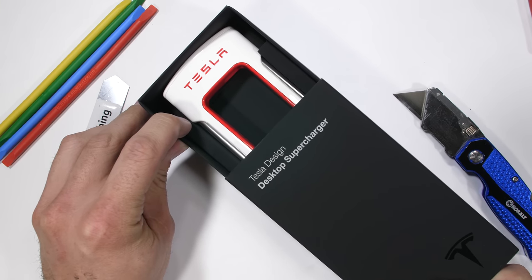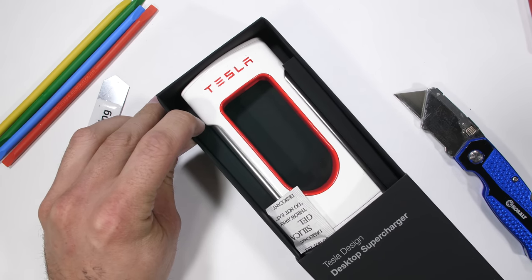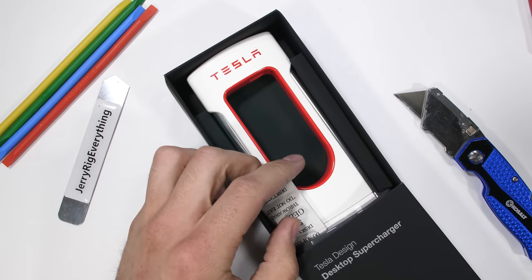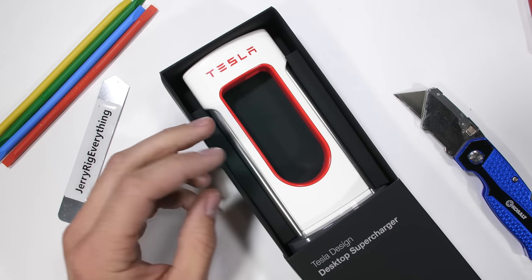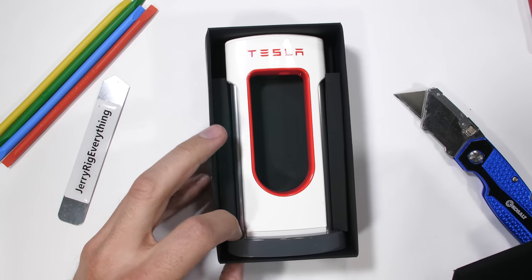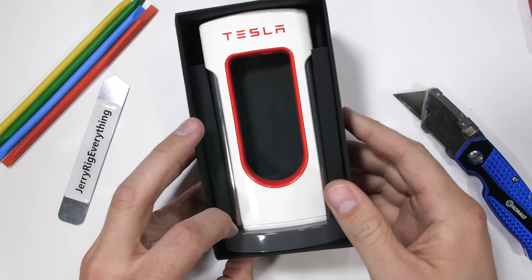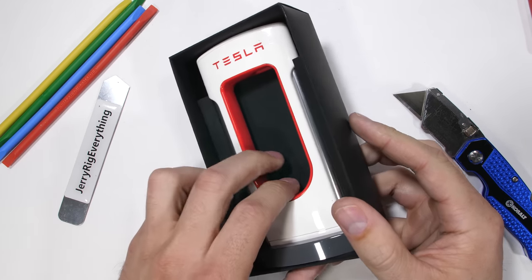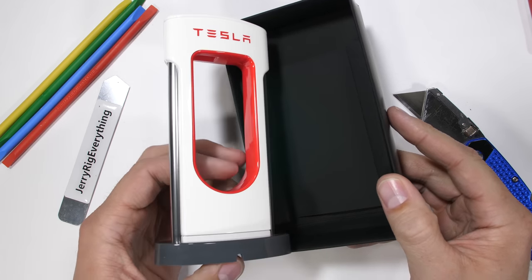A supercharger is a place where electric cars can go to charge up really fast. Tesla says this is an exact miniature replica of the life size versions. They used the same 3D CAD data file from the life size superchargers to make the desktop cell phone version, precisely replicating every detail, curve, and surface.